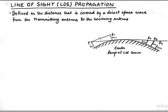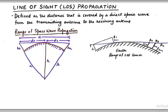We are now going to calculate this mathematically. If this is the surface of the earth with its curvature, the radius of the earth is R. Let the height of the transmitting antenna be HT and the receiving antenna be HR. We have positioned these two antennas such that they can barely see each other, with the direct wave just touching the surface of the earth. The total distance is D, which is further split into D1 and D2.